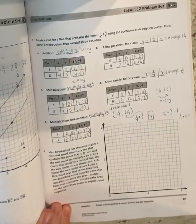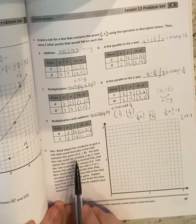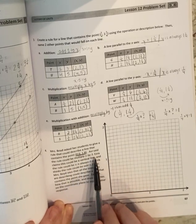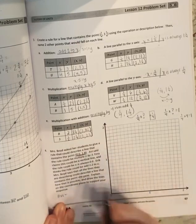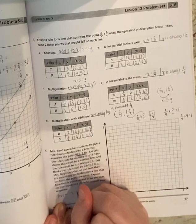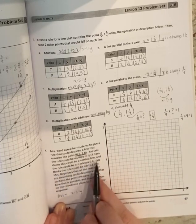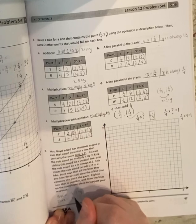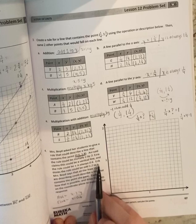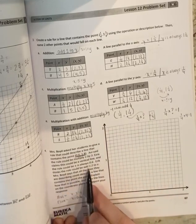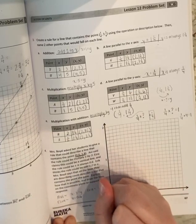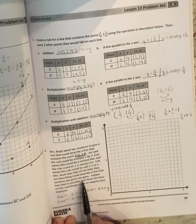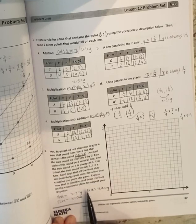Last one. It says Mrs. Boyd asked her students to give a rule that could describe a line that contains the point 0.6, 1.8. Avi said the rule could be multiply X by three. So I'm going to start writing this stuff down. Avi says multiply X by three. So X times three equals Y. Ezra claims this could be a vertical line. And the rule could be X is always 0.6. And then Eric, he thinks the rule could be add 1.2 to X. So Eric thinks X plus 1.2 equals Y. Mrs. Boyd says all the lines they are describing could describe a line that contains the point she gave. Explain how that is possible and draw the lines on the coordinate plane to support your response.